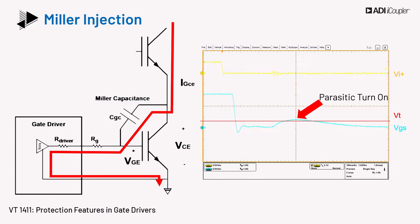A similar gate-to-drain capacitance, CGD, is present in MOSFETs, including SiC and GaN. Even though the value of CGD in wide bandgap devices may be lower, the Miller effect is still a big consideration due to faster edge rates.